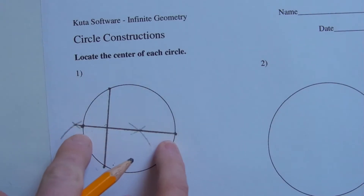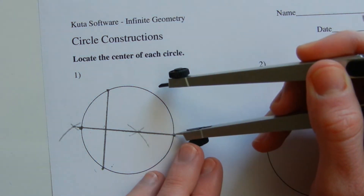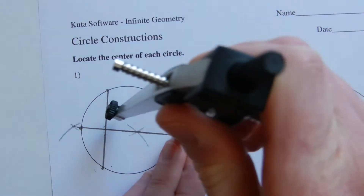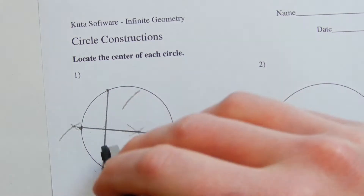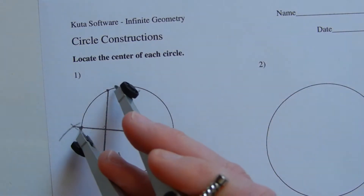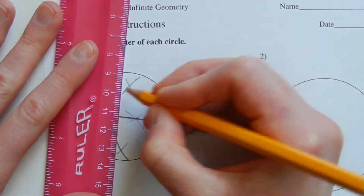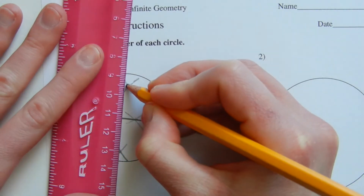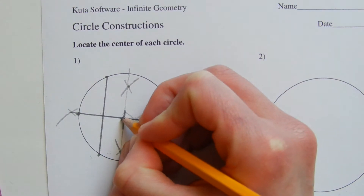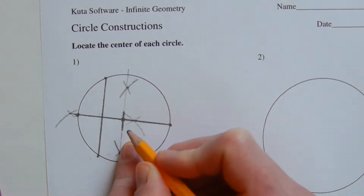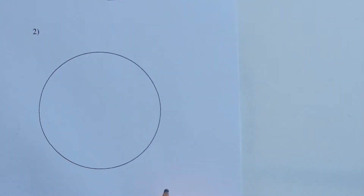Now we're going to find the midpoint of the segment we just created, and that will be the center of our circle. In order to find the midpoint, we're going to find the perpendicular bisector. Starting from one endpoint, making sure our compass is a little more than halfway, we're going to strike a mark to each side of the line, and then from the other endpoint we're going to make marks on each side. Now we'll connect those two intersection points, and the point where that perpendicular line intersects our previous line is the center of the circle.